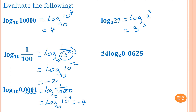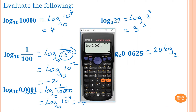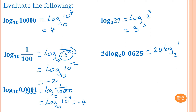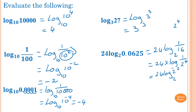Next: 24 times log base 2 of 0.0625. Using a calculator, 0.0625 equals 1 over 16, and 16 is 2 to the power 4. So this becomes 24 times log base 2 of 1 over 2 to the power 4, which is 24 times log base 2 of 2 to the negative 4. The answer is 24 times negative 4, which equals negative 96.